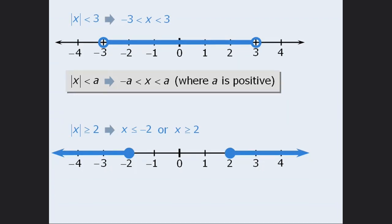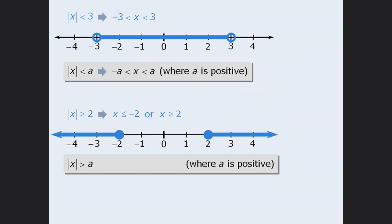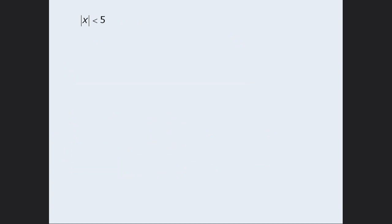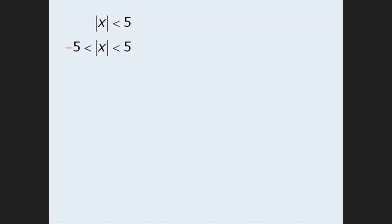We can now generalize these results as follows. If the absolute value of x is greater than a, where a is a positive number, then the solution to the inequality will be x is greater than a, or x is less than negative a. Another way to tackle inequality questions involving absolute value is to take the inequality and add the negative version of the number we are comparing the absolute value to, then add an inequality sign facing the same direction. Simply remove the absolute value symbols and you have your solution.